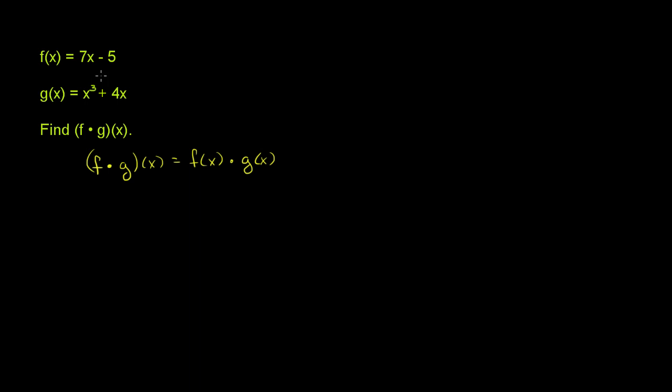And then we just have to substitute f of x with this definition, g of x with this definition, and then multiply out these algebraic expressions. So f of x is right over there, and g of x is right over there. So let's do it.